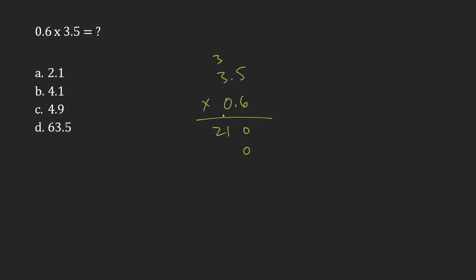Now when I get to the next one, I'm going to have 0 times 5 is 0, 0 times 3 is 0, and so this is what I'm left with.